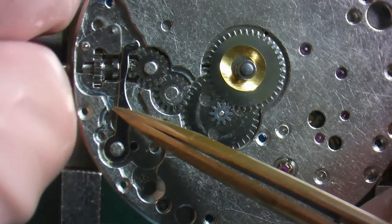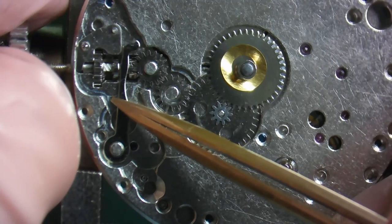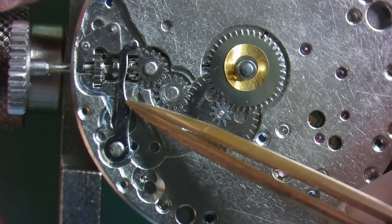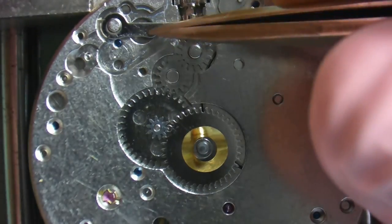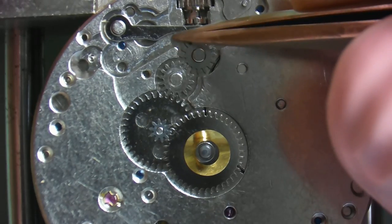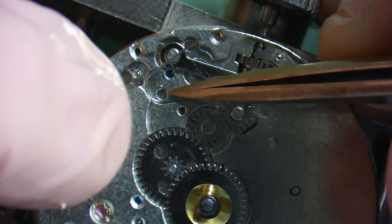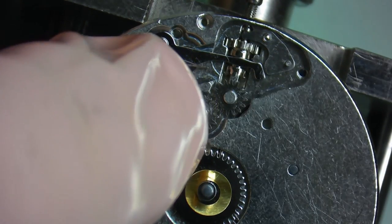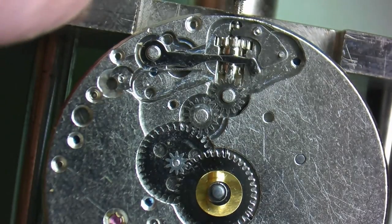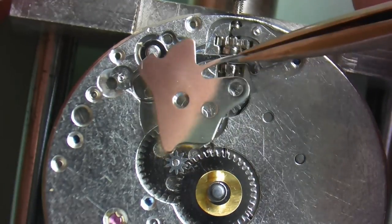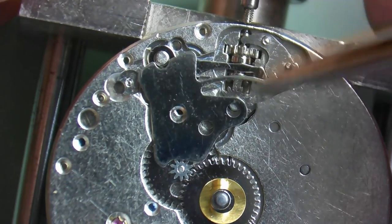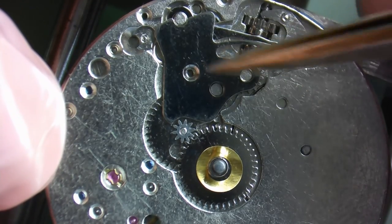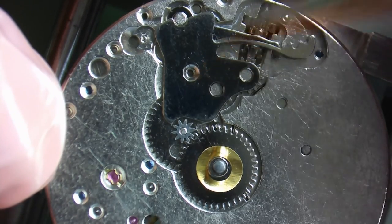Now this is a very basic motion works, but in all watches this is kind of where it starts. So let's put the rest of the keyless works back together. We'll just push the yoke and the sliding pinion back into the first position, lay our spring into position, and now our spring's in. Now we'll install the setting lever jumper back.